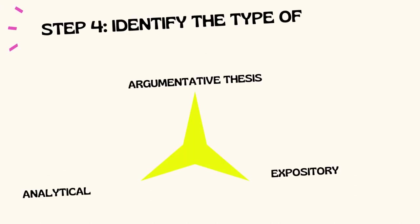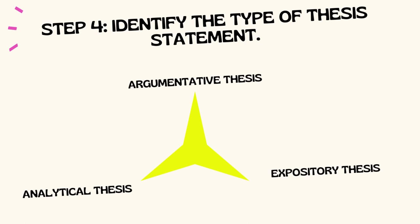Step 4: Identify the Type of Thesis Statement. Determine the type of thesis statement you need to write. There are three main types: 1. Argumentative thesis — takes a clear stance on an issue and provides reasons or evidence to support that stance. 2. Analytical thesis — breaks down a complex topic into its components and analyzes them. 3. Expository thesis — presents information or explains a topic without taking a position.